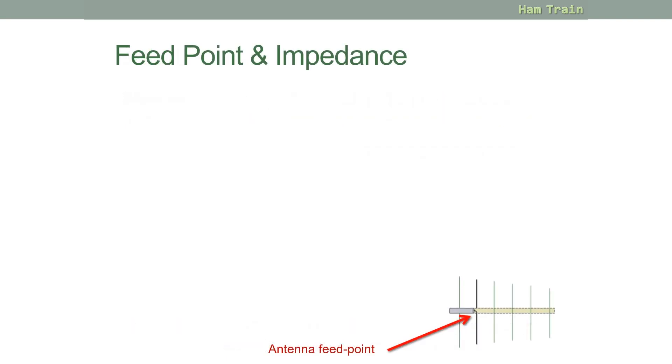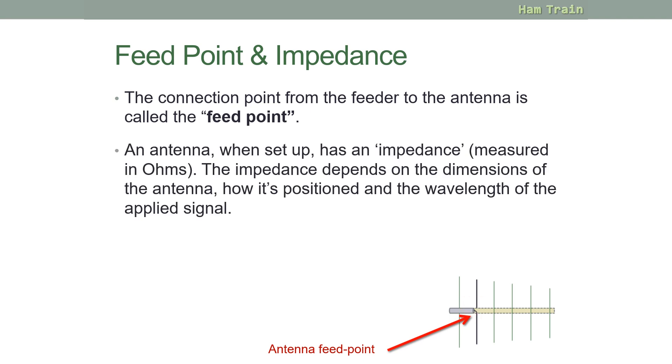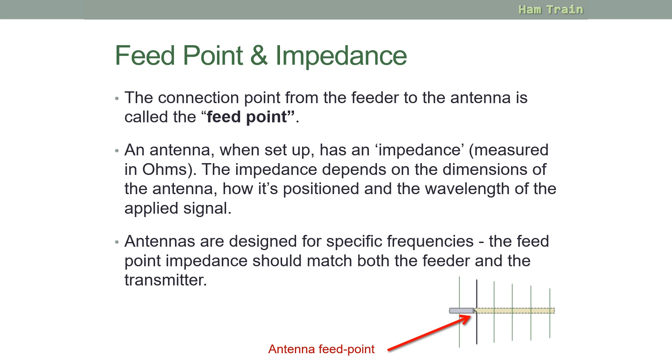Let's look now at antenna feed points and impedance. The connection point from the feeder to the antenna is called the feed point. On the screen here you can see the antenna feed point, which is where the coax intersects with the antenna. An antenna, when it's set up in position, has an impedance, which is measured in ohms. The impedance of an antenna depends on its dimensions, its height, its width and its length. The impedance also varies depending on how the antenna is positioned and how high up from the ground it is, as well of course as the wavelength of the applied signal that you're transmitting. Antennas are designed for specific frequencies. The feed point impedance should be an ideal match for the feeder and the transmitter.